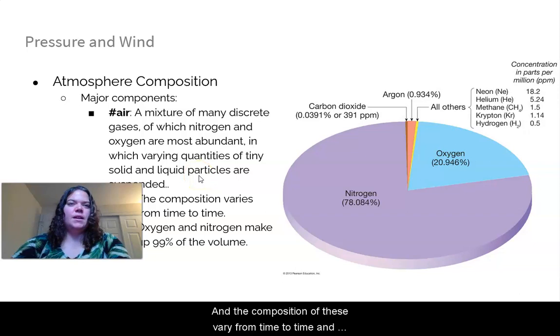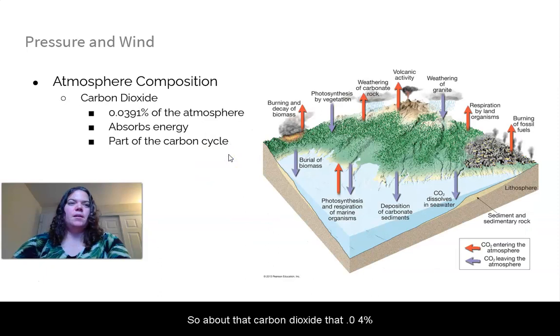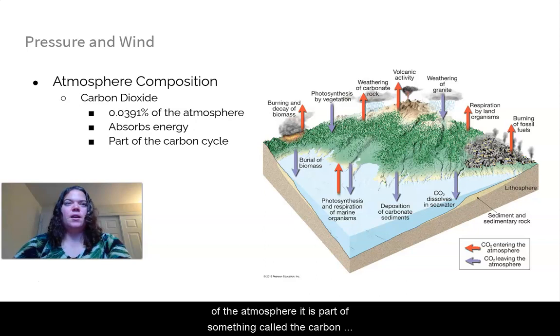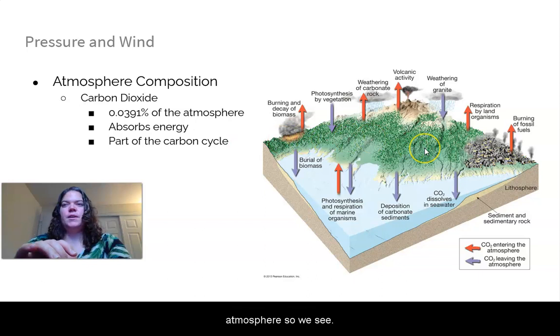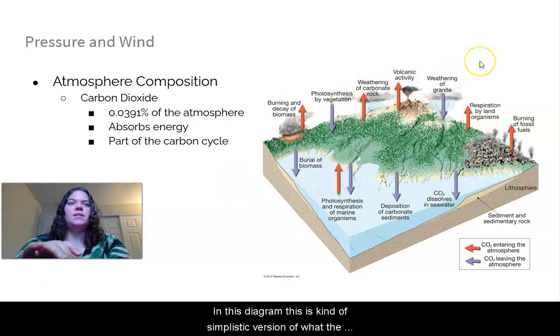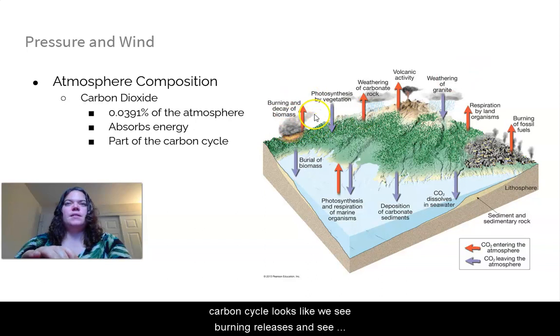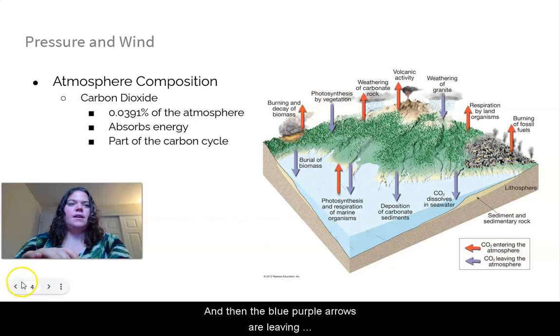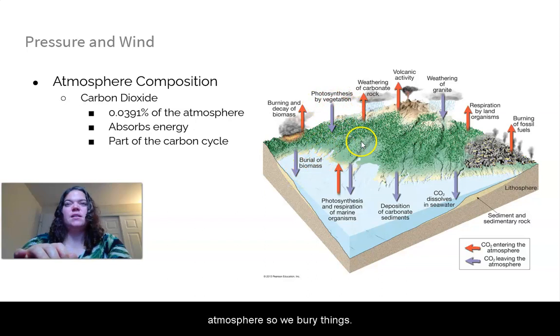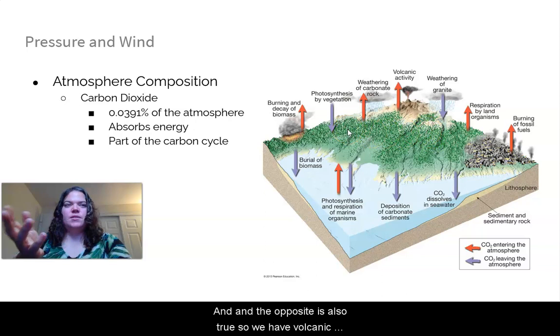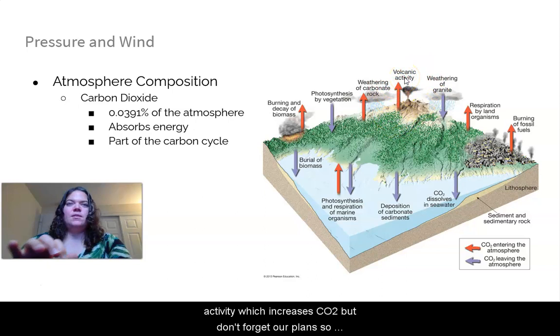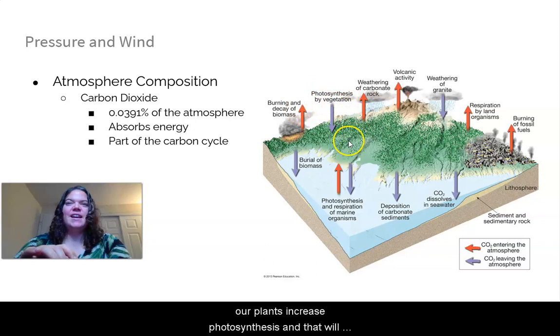The composition of these vary from time to time. Oxygen and nitrogen make up 99% of the total volume. So about that carbon dioxide, that 0.04% of the atmosphere, it is part of something called the carbon cycle, which actually absorbs and releases energy into the atmosphere. We see in this diagram a simplistic version of what the carbon cycle looks like. Burning releases into the atmosphere. We have CO2 that dissolves into seawater. We have volcanic activity which increases CO2. But don't forget our plants - photosynthesis and marine organisms like phytoplankton also take up CO2.